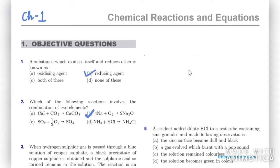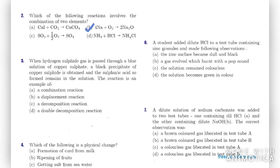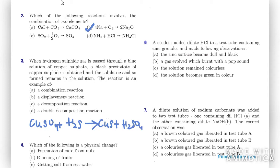Moving on to the third question: when hydrogen sulfide gas is passed through a blue solution of copper sulfate, a black precipitate of copper sulfide is obtained and sulfuric acid remains in solution. We have CuSO4 and H2S forming copper sulfide and H2SO4. This is a double decomposition reaction.